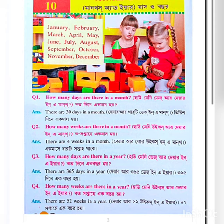How many days are there in a month? There are 30 days in a month. How many weeks are there in a month? There are 4 weeks in a month. How many days are there in a year? There are 365 days in a year. How many weeks are there in a year? There are 52 weeks in a year.